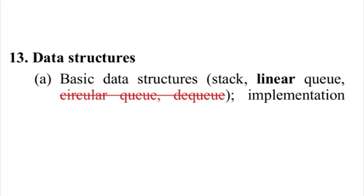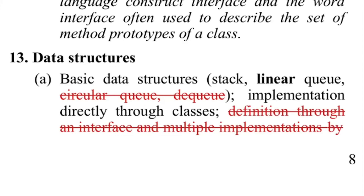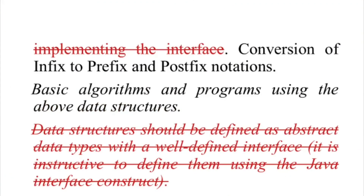The next change in section C is in data structures, where circular queue and dequeue has been removed from the syllabus. They have emphasized that only stack and linear queue is in the syllabus now. Also, since interfaces are now removed, the data structures still in the syllabus must be implemented directly through classes, without declaring abstract classes and implementing the interfaces.